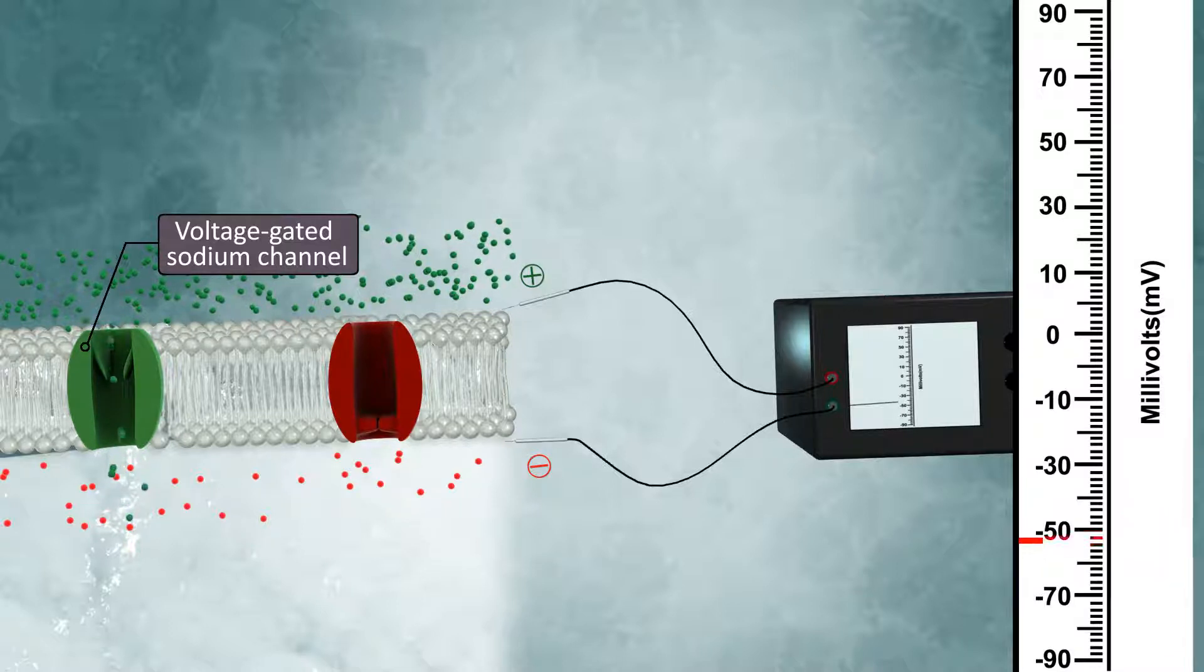Some voltage gated channels open quickly, while others are slow to open, even though they may reach threshold at the same time. The speed at which they open causes significant changes in membrane potential.